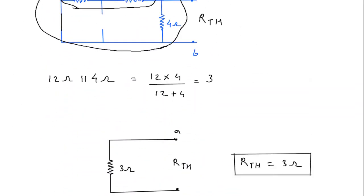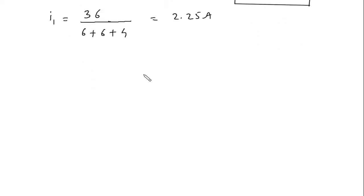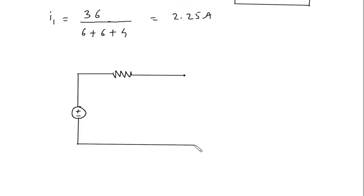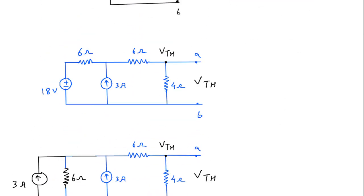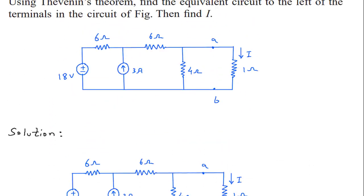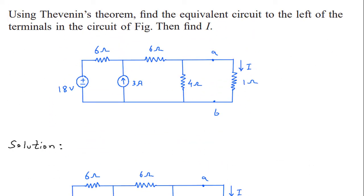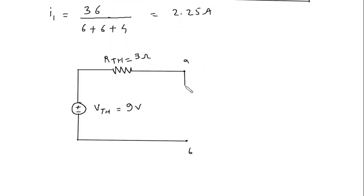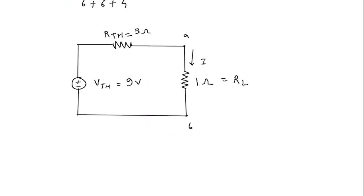Now we have the value of Rth which is 3 ohm and Vth which is 9 volt. We will draw the Thevenin equivalent circuit with Rth equal to 3 ohm in series with Vth equal to 9 volt between terminals A and B. The load resistance RL is 1 ohm, and we need to find current I.